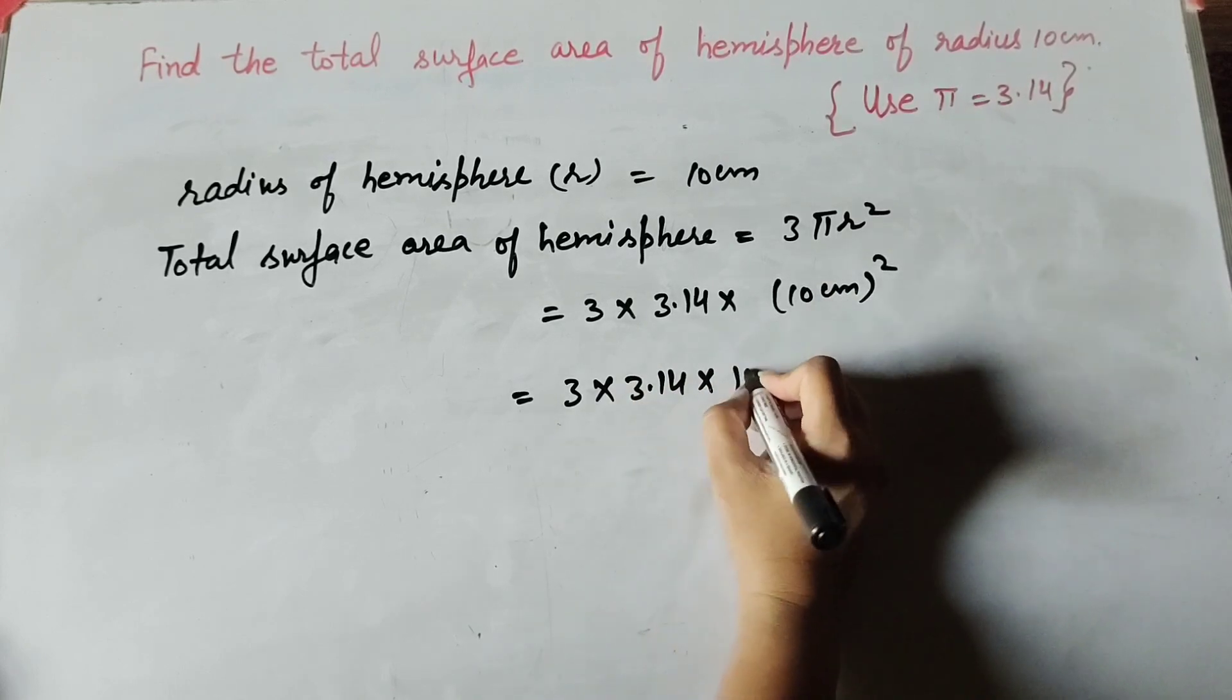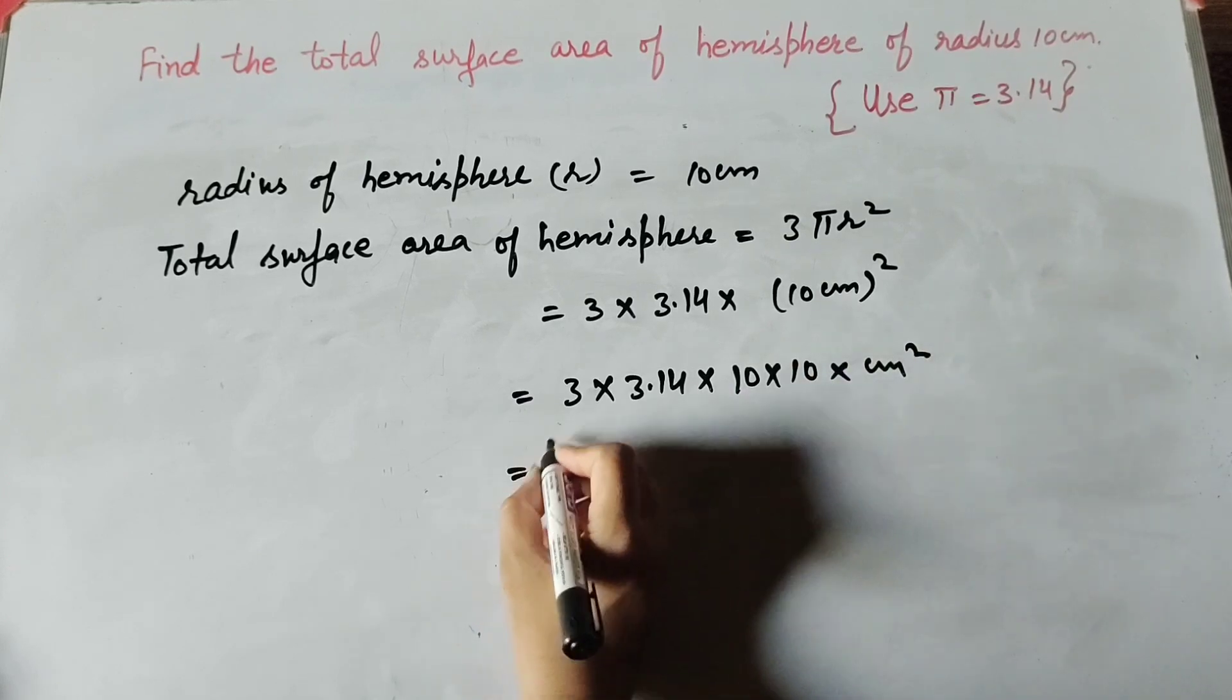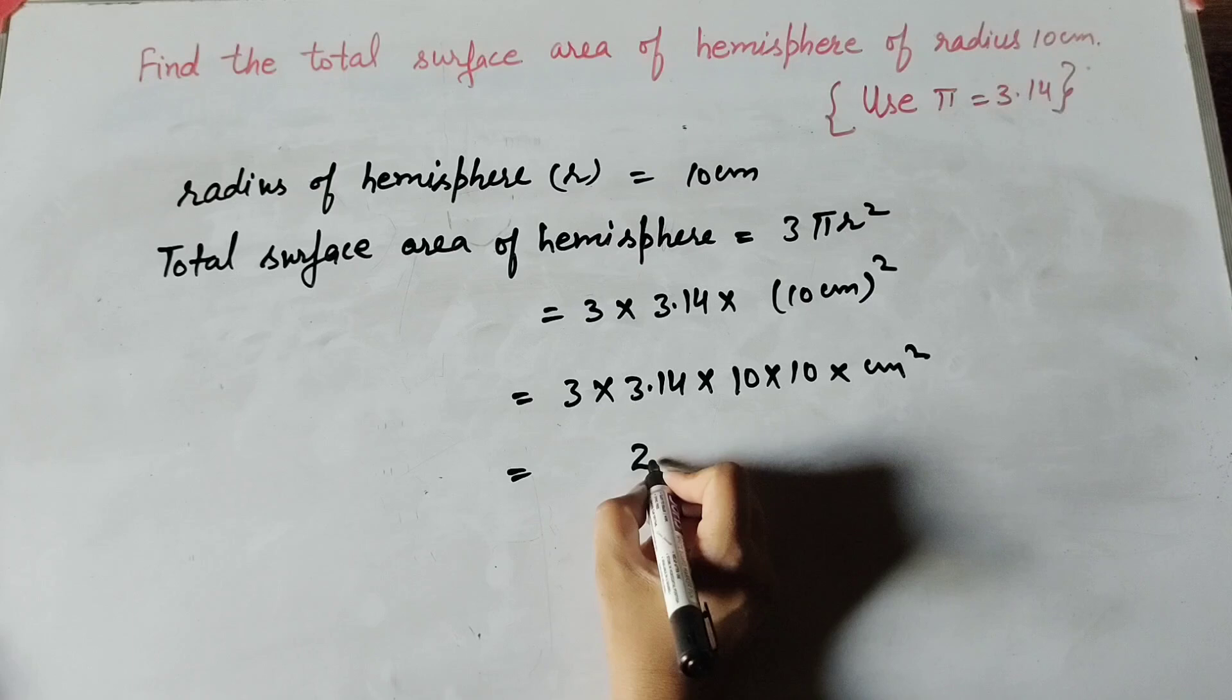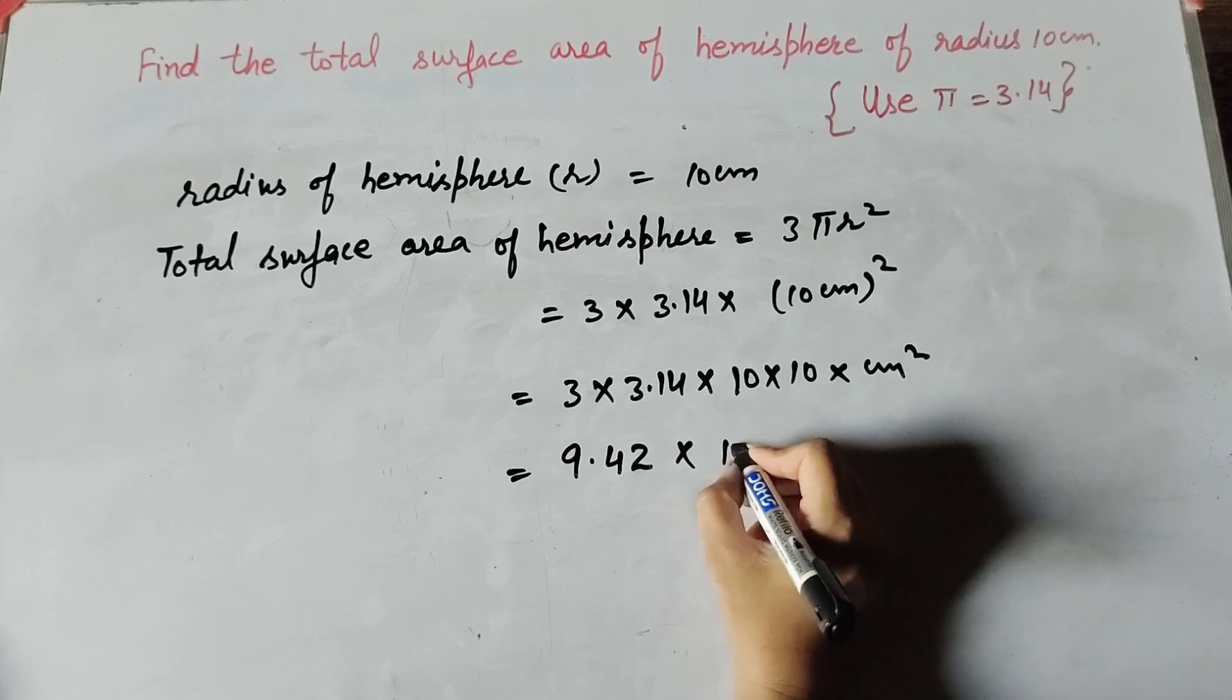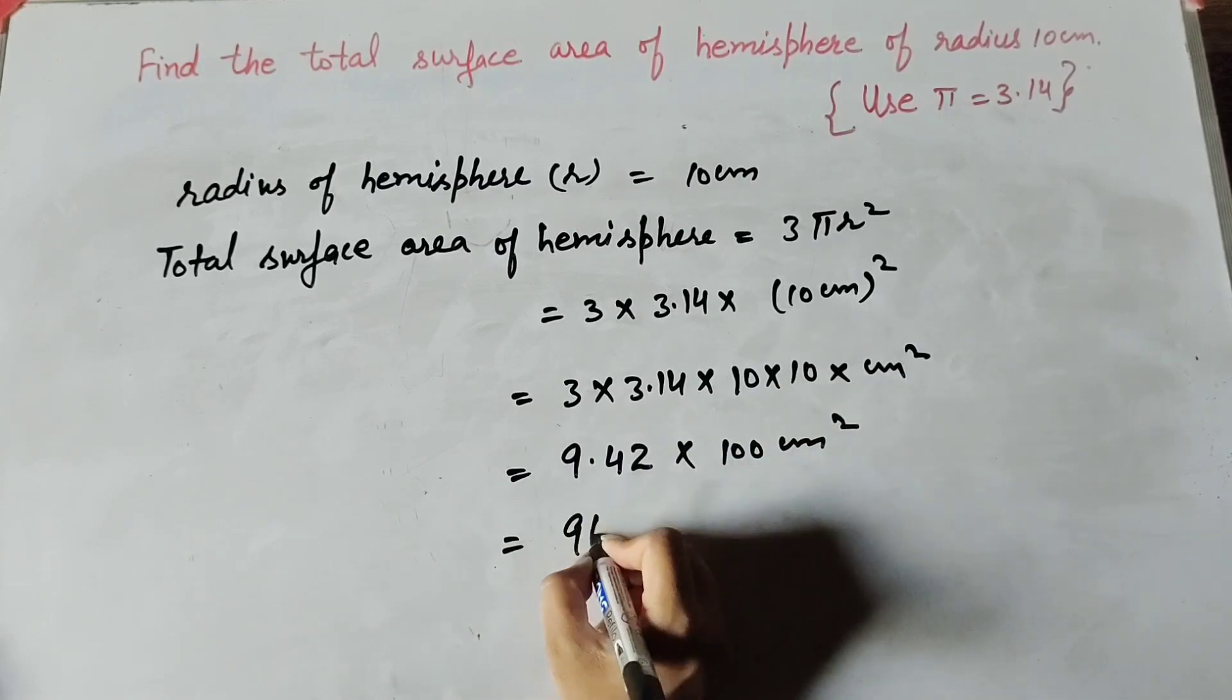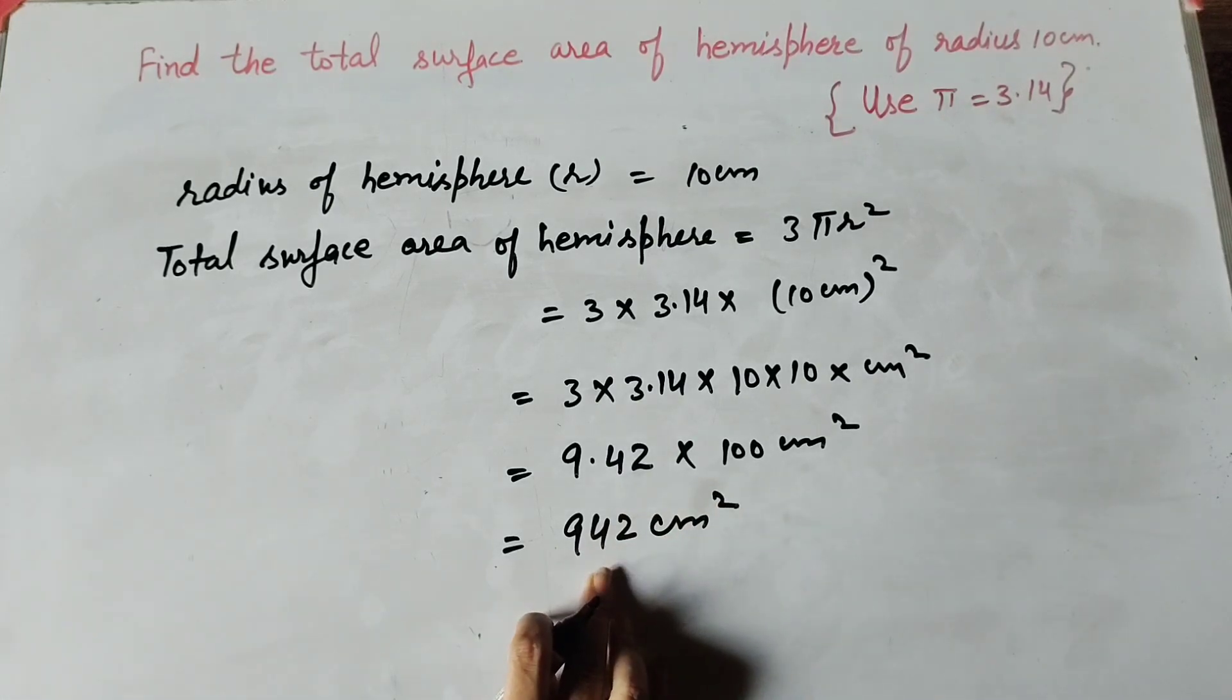3 × 3.14 × 10 × 10 centimeter square. 3 multiply by 3.14, we get 9.42 multiply by 100. This equals 942 centimeter square.